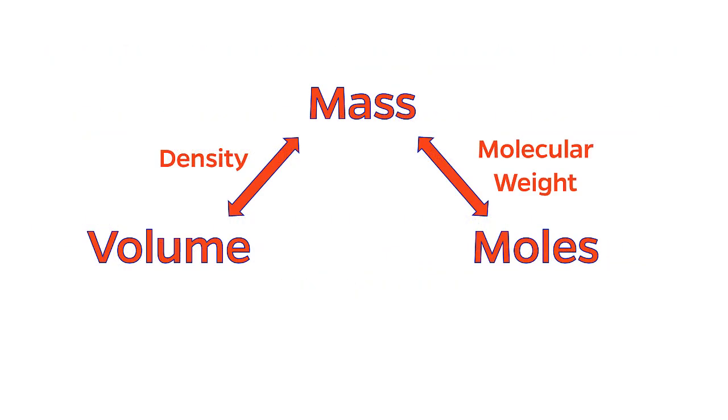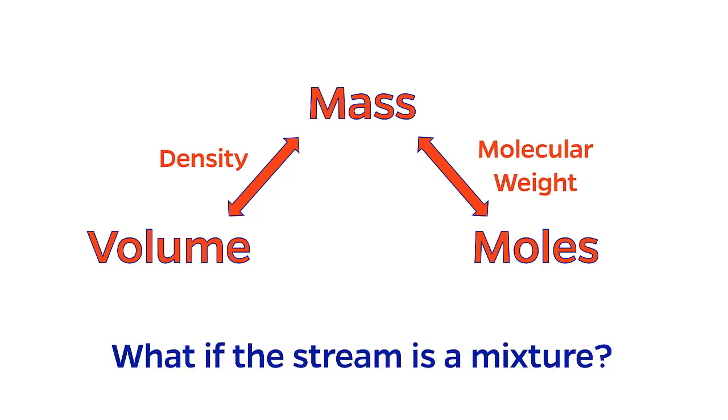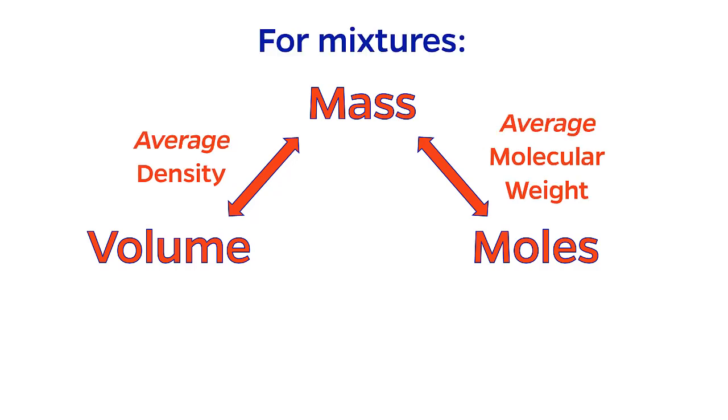Earlier in this episode, I taught you that density is the link between mass and volume, and molecular weight is the link between mass and moles. This might have seemed straightforward when we had a single component, but what should we do if the stream is a mixture? The strategy here is to use the average density, or average molecular weight.